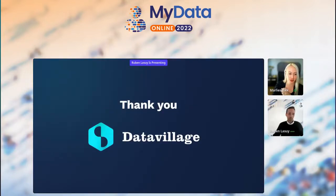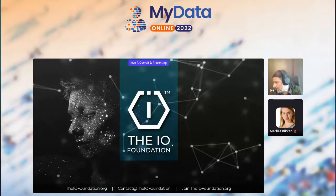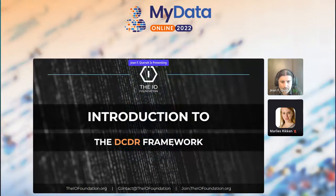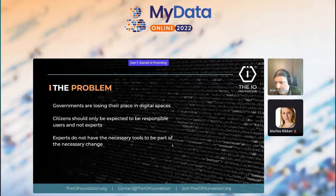Next is Jean Carol, founder and CEO of the IO Foundation, who will introduce the DCDR Framework. Jean: the IO Foundation is a tech NGO advocating for data-centric digital rights. We've been developing something called the DCDR Framework — Data-Centric Digital Rights Framework — to solve some of the problems we've been looking into: governments losing their place in digital spaces, citizens always expected to know too much about how data protection laws work for them, and developers not having the necessary tools to be part of that change, because we're missing taxonomies and ways for them to understand what is expected of them.